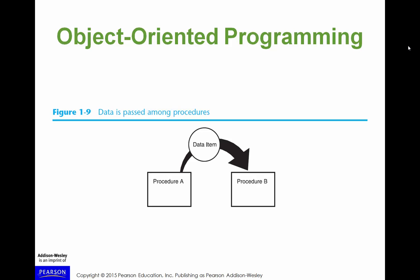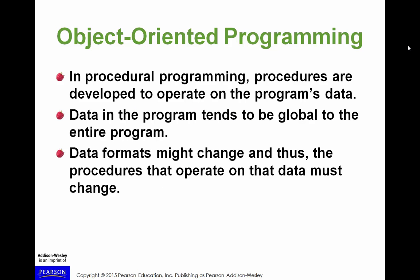Here's an example: you've got a procedure that takes a data item and passes it to another procedure. Passing data around is something that happens in all programming languages, so the use of data is very important to all of computing. This representation shows you that for procedure B to have the data it needs, it relies on procedure A sending it the data. In that procedural programming approach, there is this separation of data — data is just something that gets passed around.